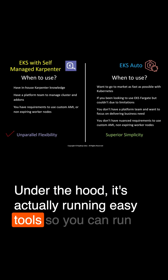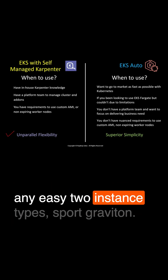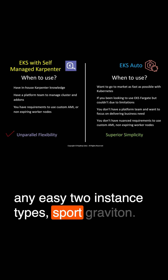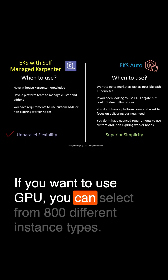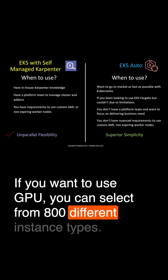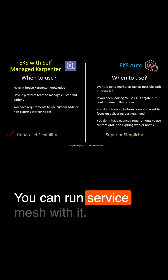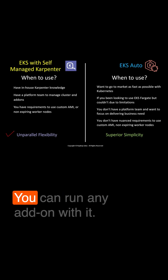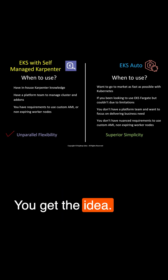EKS Auto solves all those challenges. Not only do we manage it under the hood, it's actually running EC2s, so you can run any EC2 instance types — spot, Graviton. If you want to use GPUs, you can select from 800 different instance types. You can run service mesh, any add-on, and daemon sets. You get the idea.